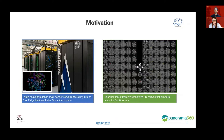Modern scientific experiments, like population-level cancer surveillance studies, are conducted on complex, large-scale, distributed, high-performance infrastructures, like DOE leadership computing facilities. Even though these systems are designed with reliability in mind, they can experience anomalies ranging from subtle, like network performance degradation, to critical, like file system integrity errors.